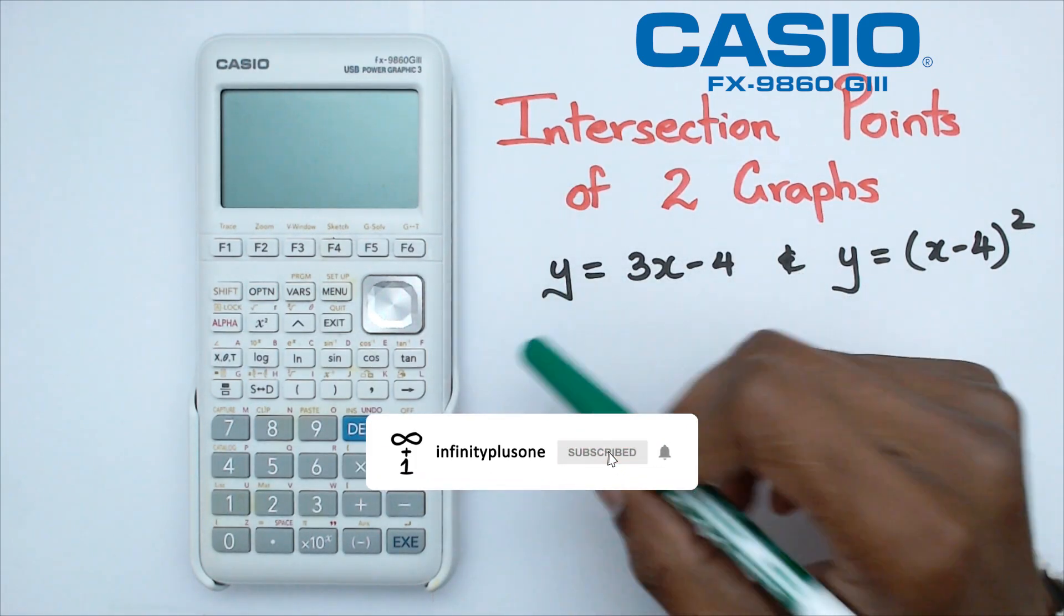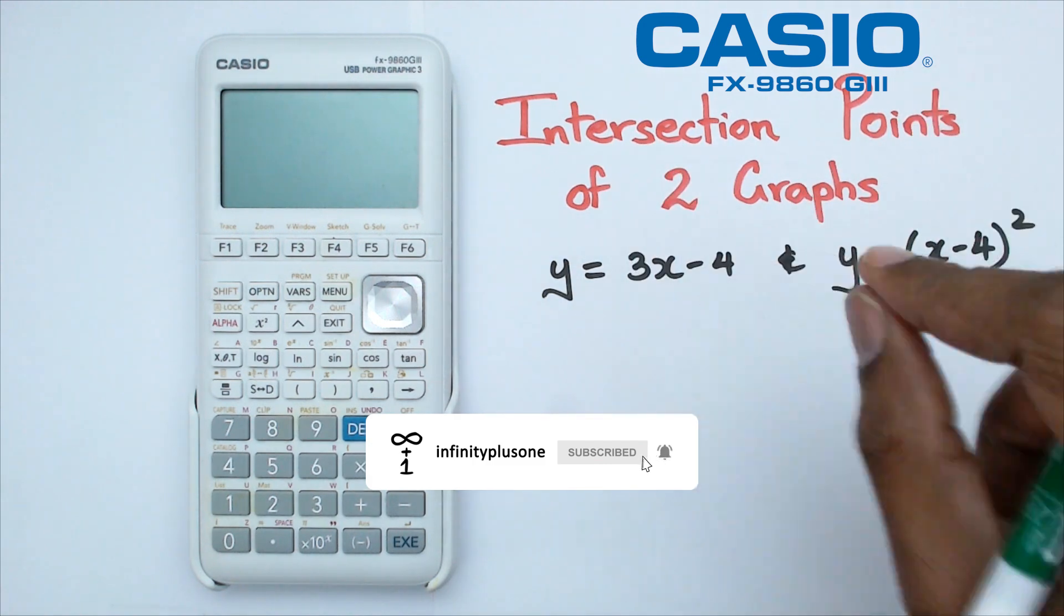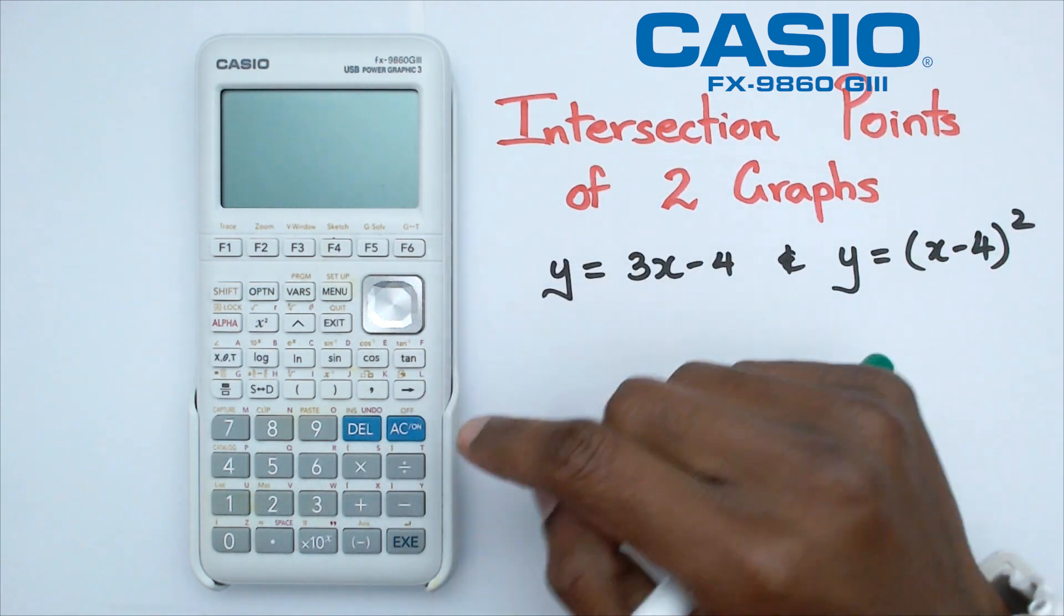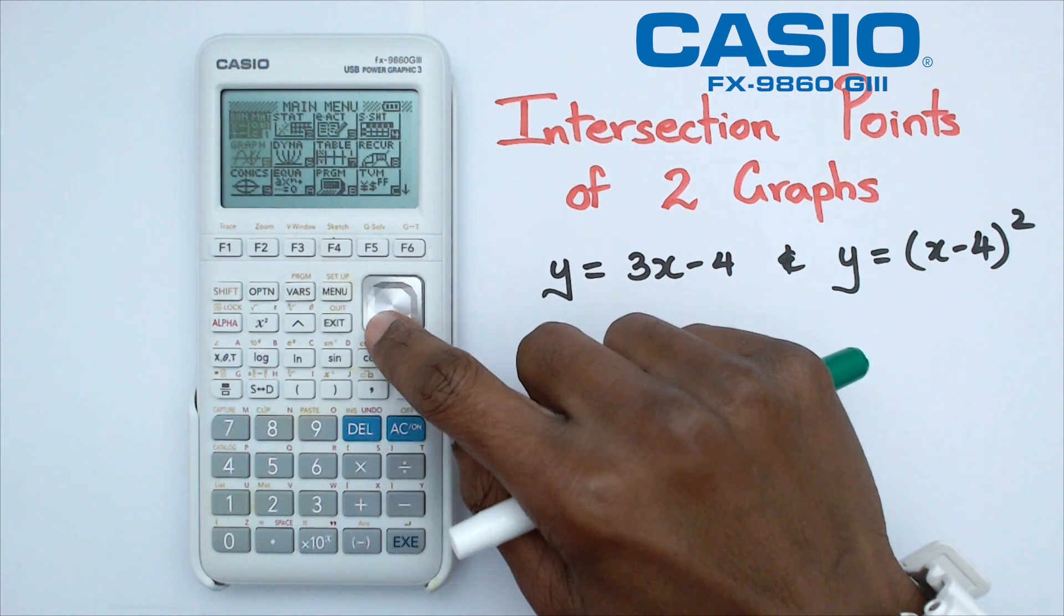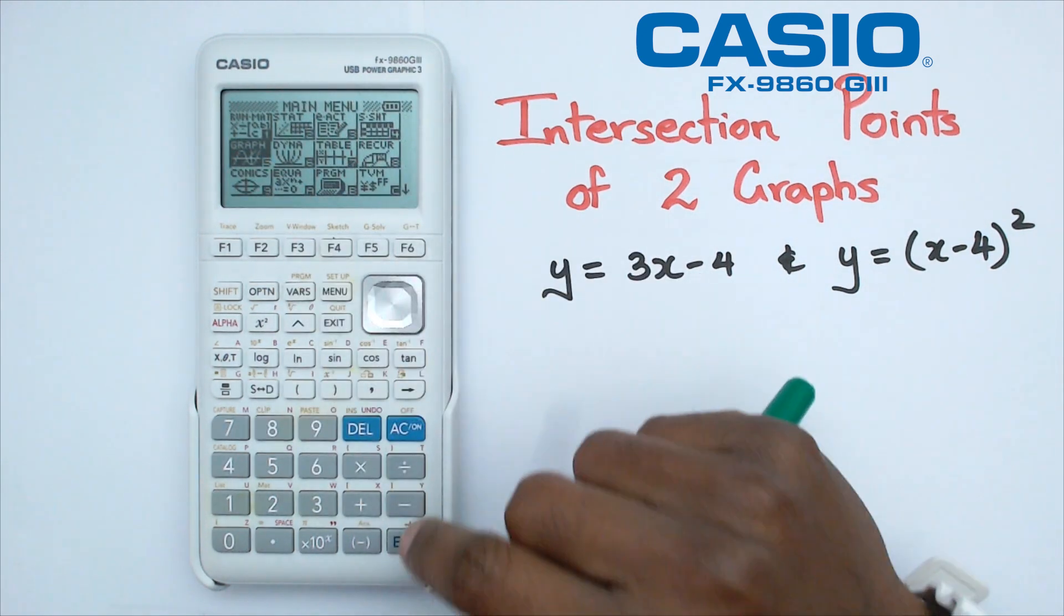Alright, so the first thing we want to be doing is we actually want to plot these two graphs in the graph mode. The way we're going to do that is switch on the calculator, click on main menu, go down to the graphs menu, click enter.